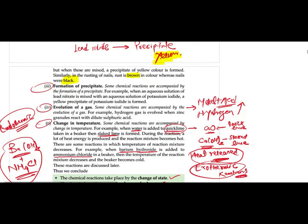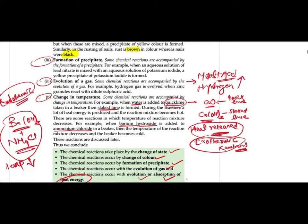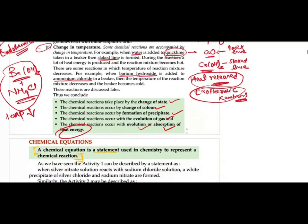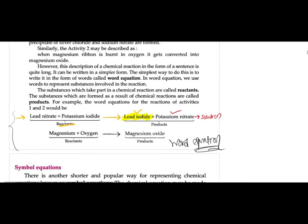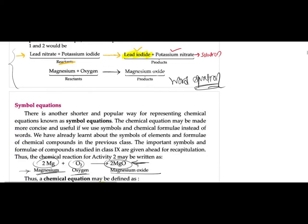Then we studied chemical equations — a statement used in chemistry to represent a chemical reaction. We studied word equations from the activities we did: lead nitrate plus potassium iodide gives lead iodide plus potassium nitrate; magnesium plus oxygen gives magnesium oxide. These are word equations.